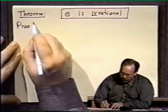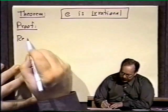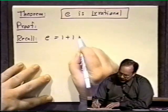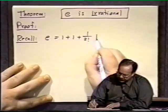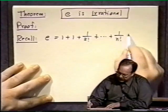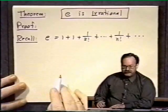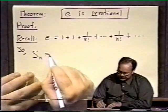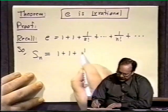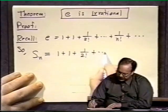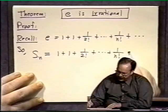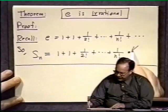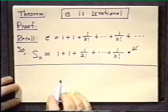Proof. Well, we start out by recalling what we just wrote down, that e is equal to 1 plus 1 plus 1 over 2 factorial plus up to typical term 1 over n factorial plus out to infinity. And so we can let S sub n, the nth partial sum, be 1 plus 1 plus 1 over 2 factorial plus up to 1 over n factorial, period. Partial sum always ends here at that point.